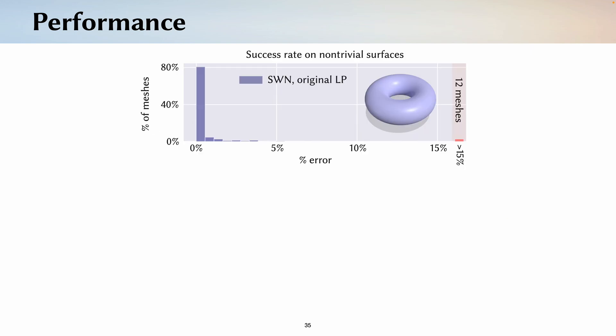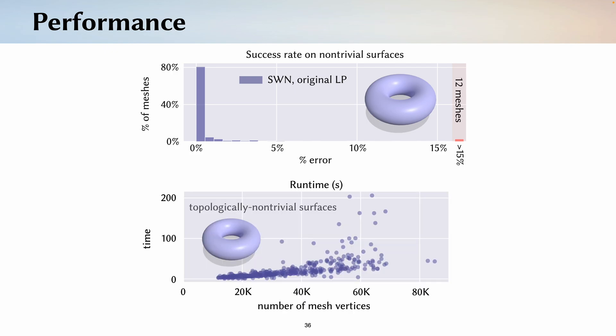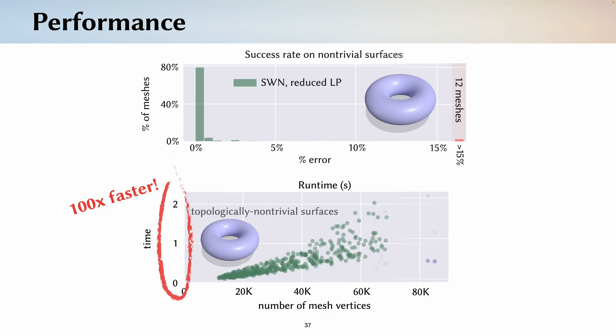On domains of non-trivial topology like this torus, we find that accounting for non-bounding curves leads to a high level of accuracy for region classification on a benchmark. We have to solve a linear program, though, which can lead to longer runtimes.